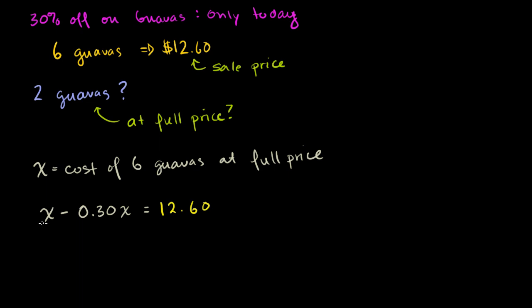And now we just do algebra. We could imagine there's a 1 in front. x is the same thing as 1x. So 1x minus 0.3x is going to be equal to 0.7x. So we get 0.7x is equal to $12.60. And once you get used to these problems, you might just skip straight to this step right here. 70% of the full price is equal to my sale price, right? I took 30% off. This is 70% of the full price.